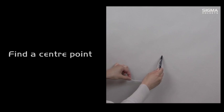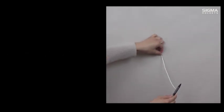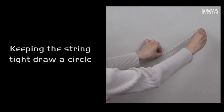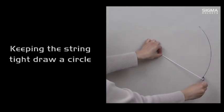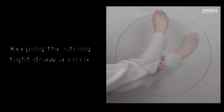Using a marker and string, draw a circle on the paper. Be careful to ensure that the marker is always perpendicular to the paper. Make sure that the string is always kept tight as you draw the circle.